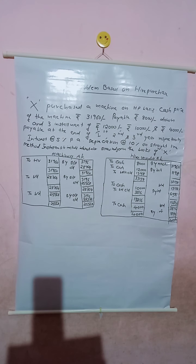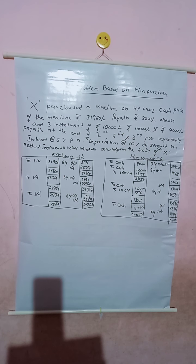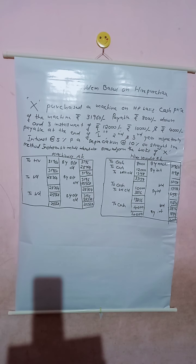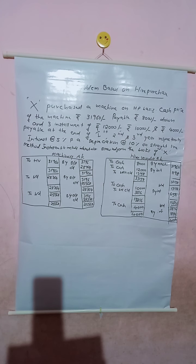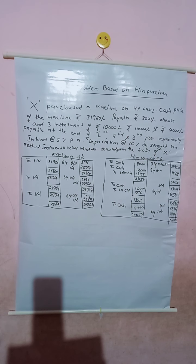X is the hire purchaser. He purchased a machine on hire purchase basis from the hire vendor. The name of the vendor is not mentioned in this question. The cash price of the machine is Rs. 31,960, and the down payment is Rs. 8,000, which is payable at the time of signing the agreement. The balance is payable in three installments of Rs. 12,000, Rs. 10,000, and Rs. 4,000 respectively. We need to draw the ledger account in the books of the hire purchaser.